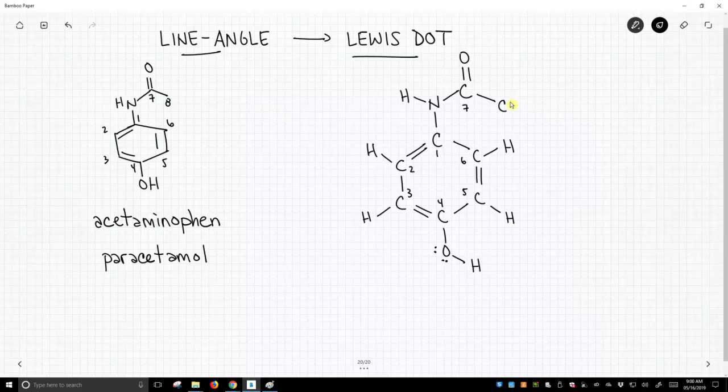Now, carbon 8 has only one bond drawn to it, so it must have three more bonds. Those are two hydrogens, which we don't have to show in the line-angle structure. It's carbon 8.